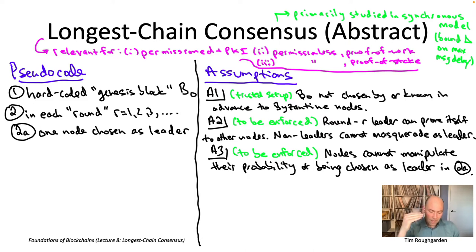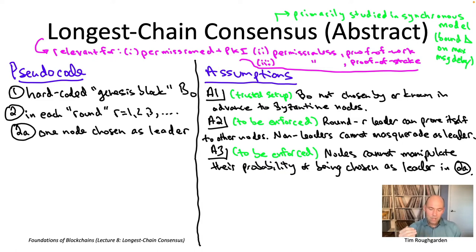There are cool ideas to deal with this that we'll talk about in lecture 12. You seem to need at least moderately fancy cryptographic primitives to enforce this assumption in a proof of stake context.